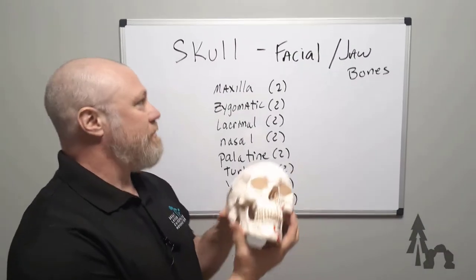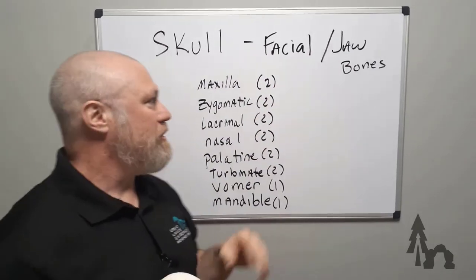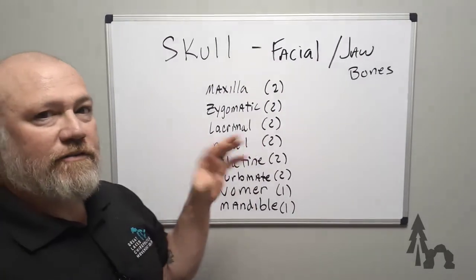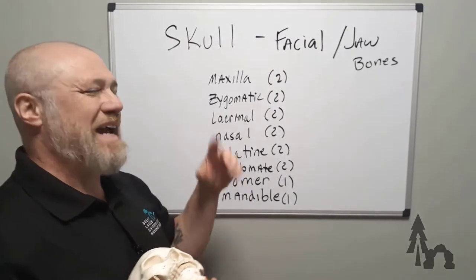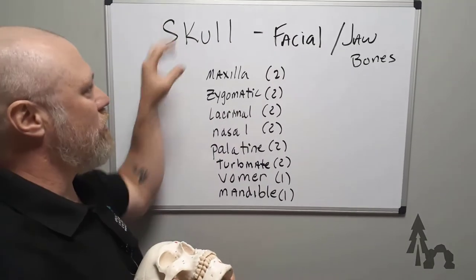We'll keep going with the bones of the skull. Now we're going to do the facial and jaw bones. There are 14 face and jaw bones. Remember there were 8 in the cranium, so it gives us 22 bones of the skull.